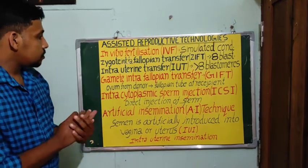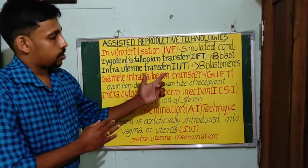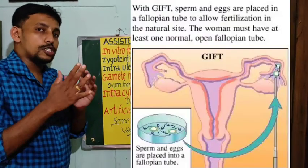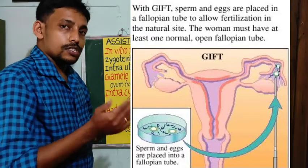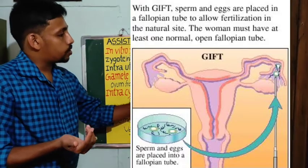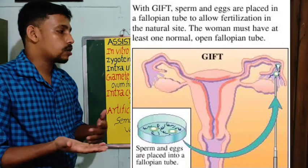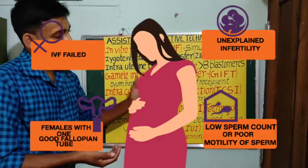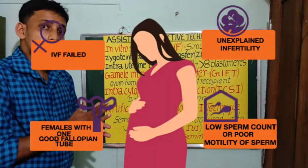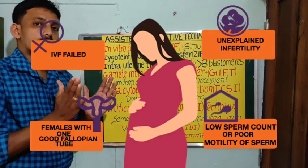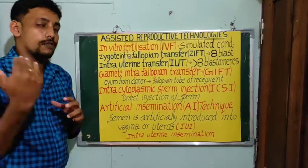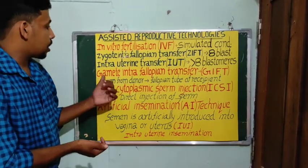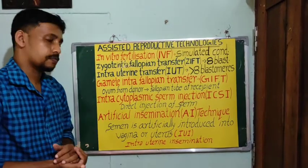The second technique is gamete intra-fallopian transfer or GIFT. Here, the ovum collected from a donor is transferred into the fallopian tube of another female — the recipient — who cannot produce ovum but can provide a favorable medium for fertilization and further development.